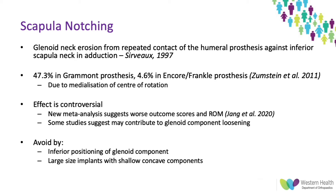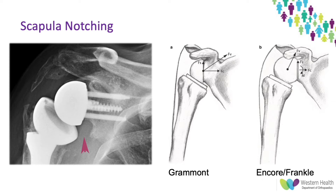These pictures show scapular notching. The picture on the left shows significant scapular neck notching from the inferomedial aspect of the humeral tray. The picture on the right shows the difference in center of rotation between the Grimont prosthesis and the Encore prosthesis. The Grimont prosthesis can be thought of as an inlay prosthesis, while the Encore — introduced by Mark Frankel in 2002 — can be thought of as an onlay prosthesis. The Encore prosthesis does increase shear forces at the bone-implant interface of the glenoid and may lead to increased glenoid component loosening.